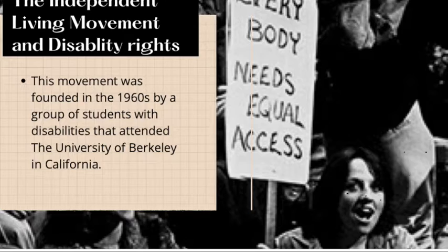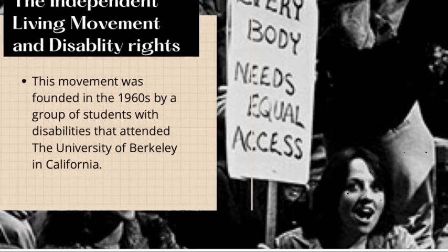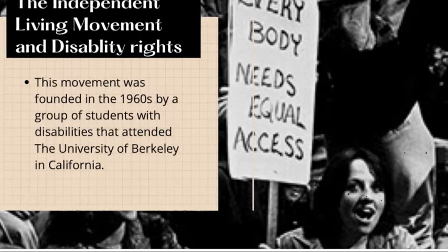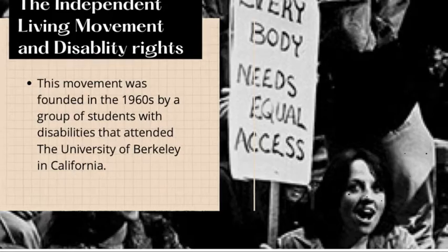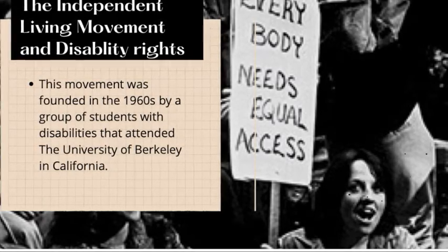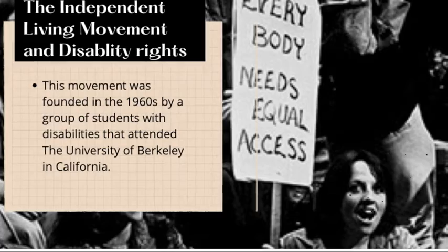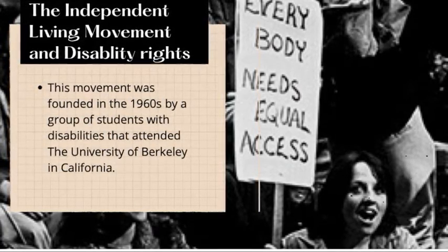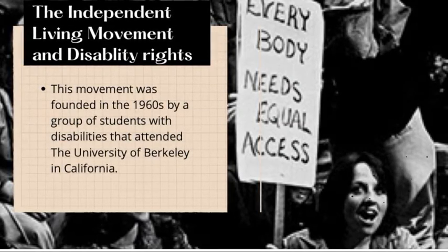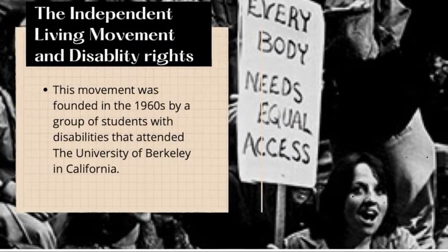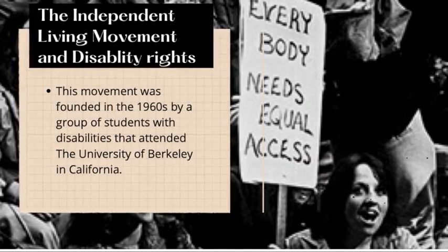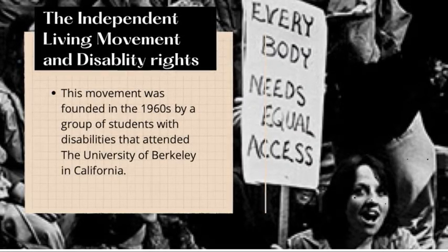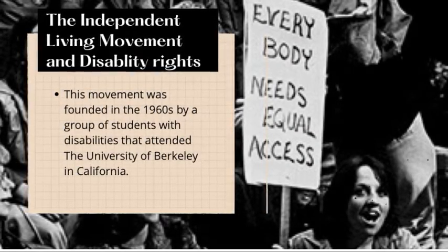What exactly is the independent living movement? This movement was founded in 1960 by a group of college students who attended the University of Berkeley in California. The philosophy is that people with disabilities have the same rights, options, and choices as anybody else. This is significant because all these students wanted was equal access and equal opportunity to do the things other college students were doing — they just needed that extra help and accommodation, which they weren't getting, and that motivated them to form this movement.